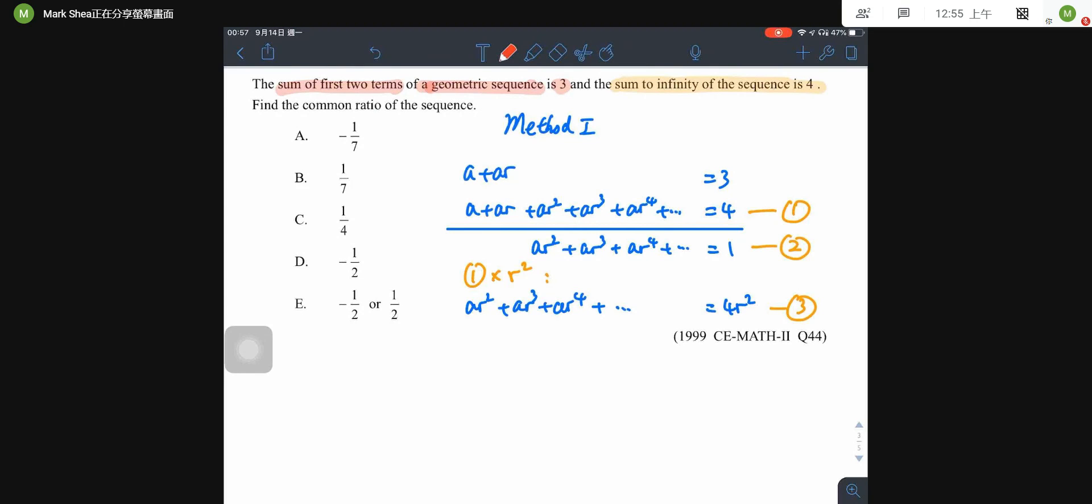Therefore, we can have 4r squared equal to 1. The right-hand sides are equal. So, r squared is 1 over 4, then r is plus or minus 1 over 2. So, the answer is E. That's all for method 1.